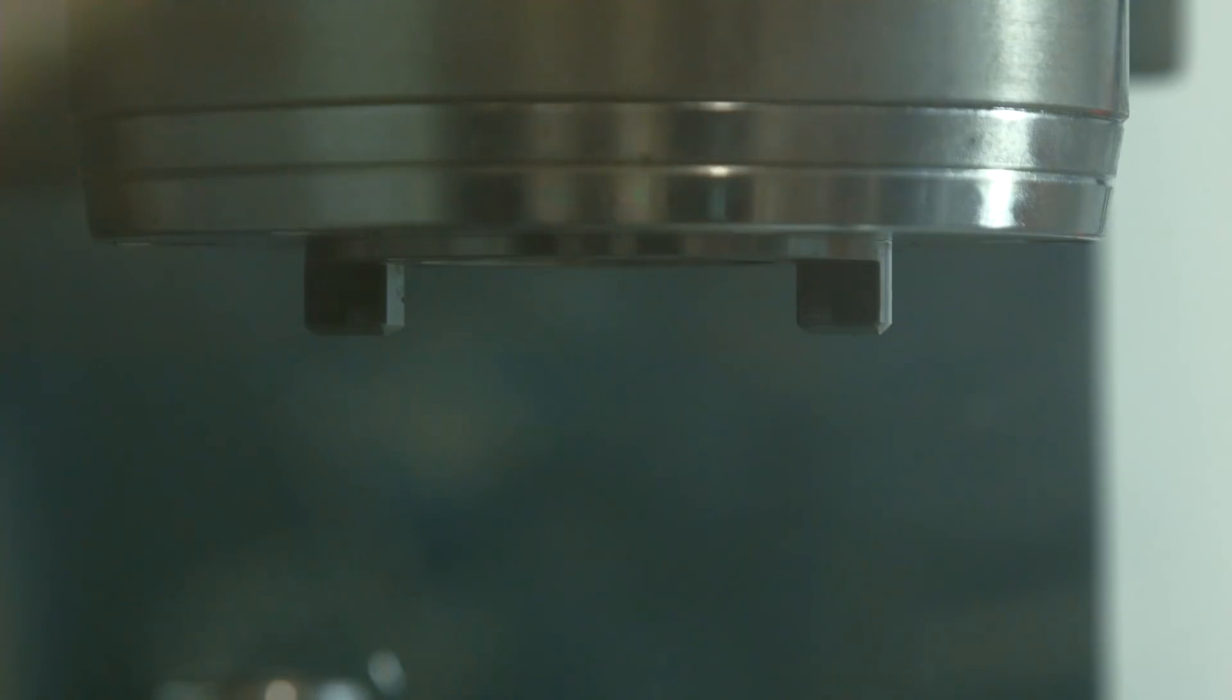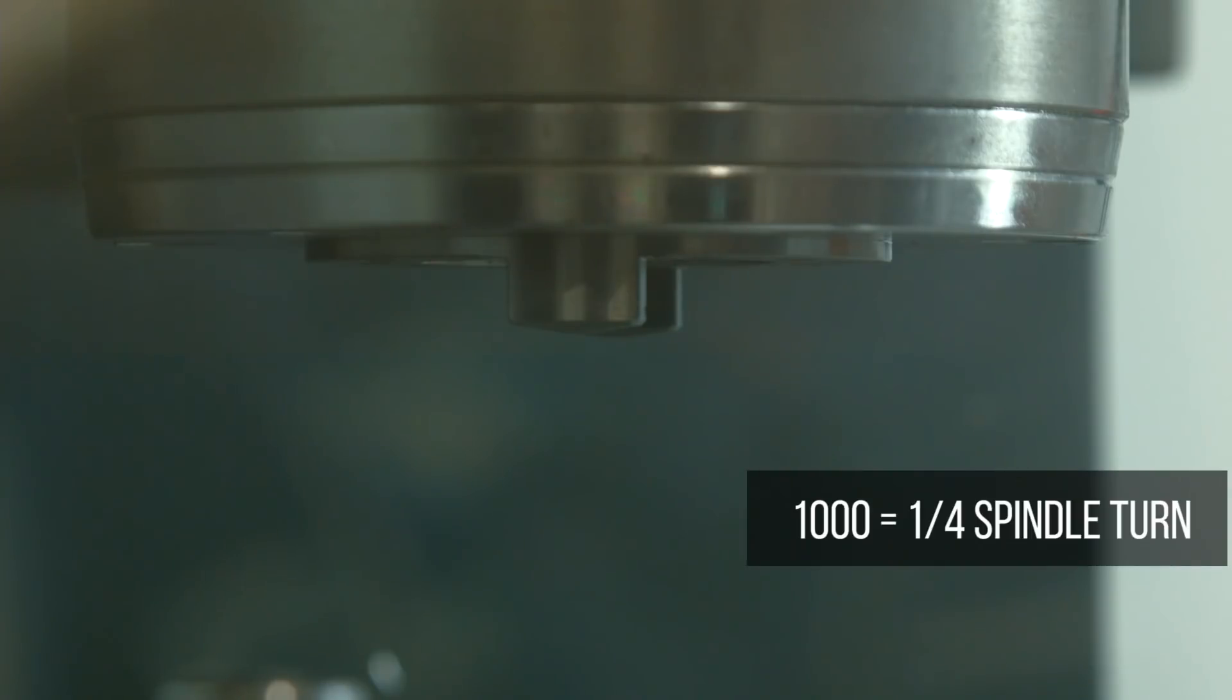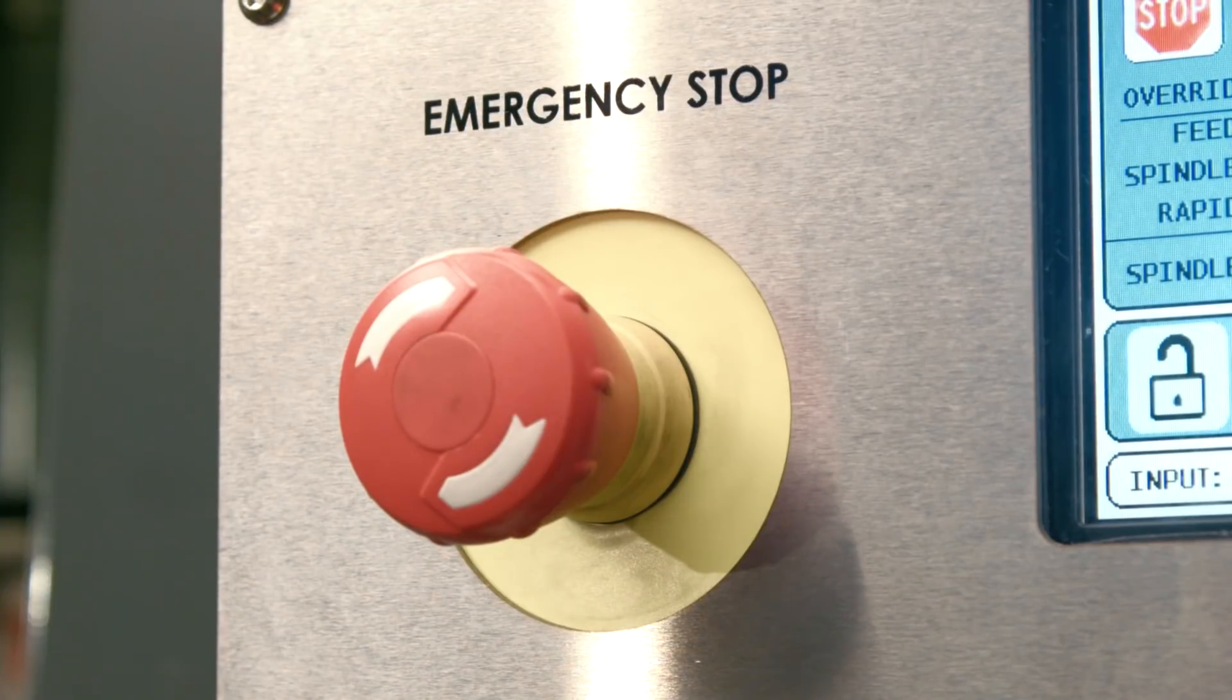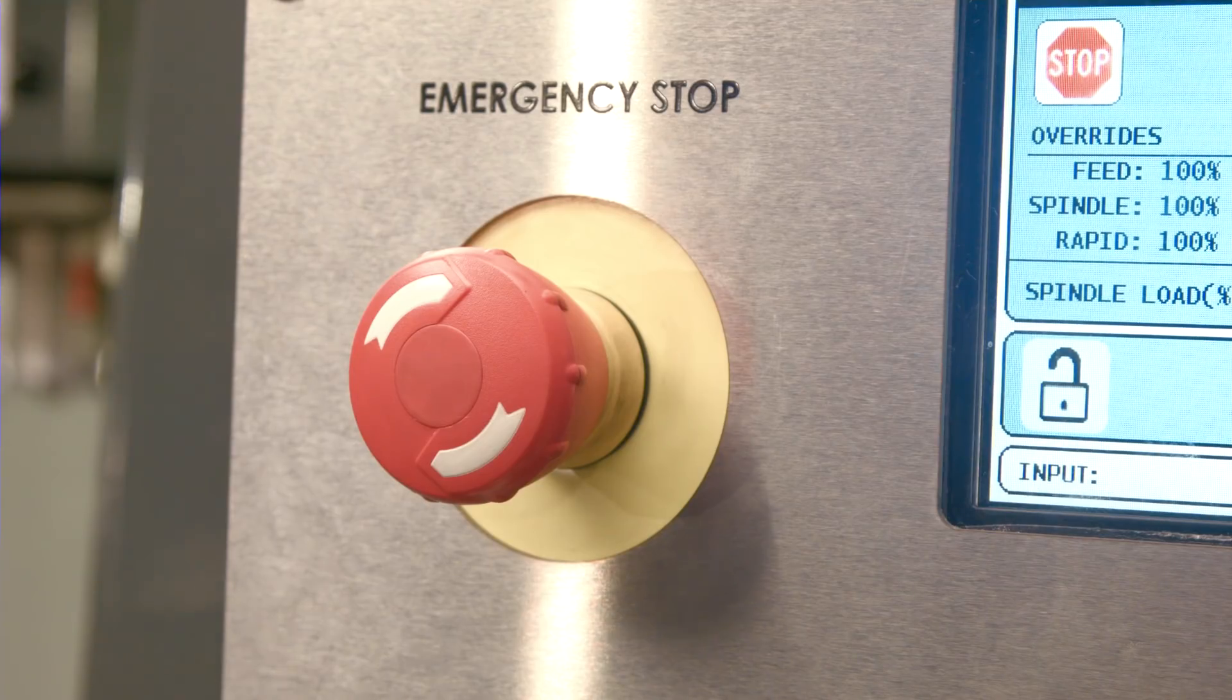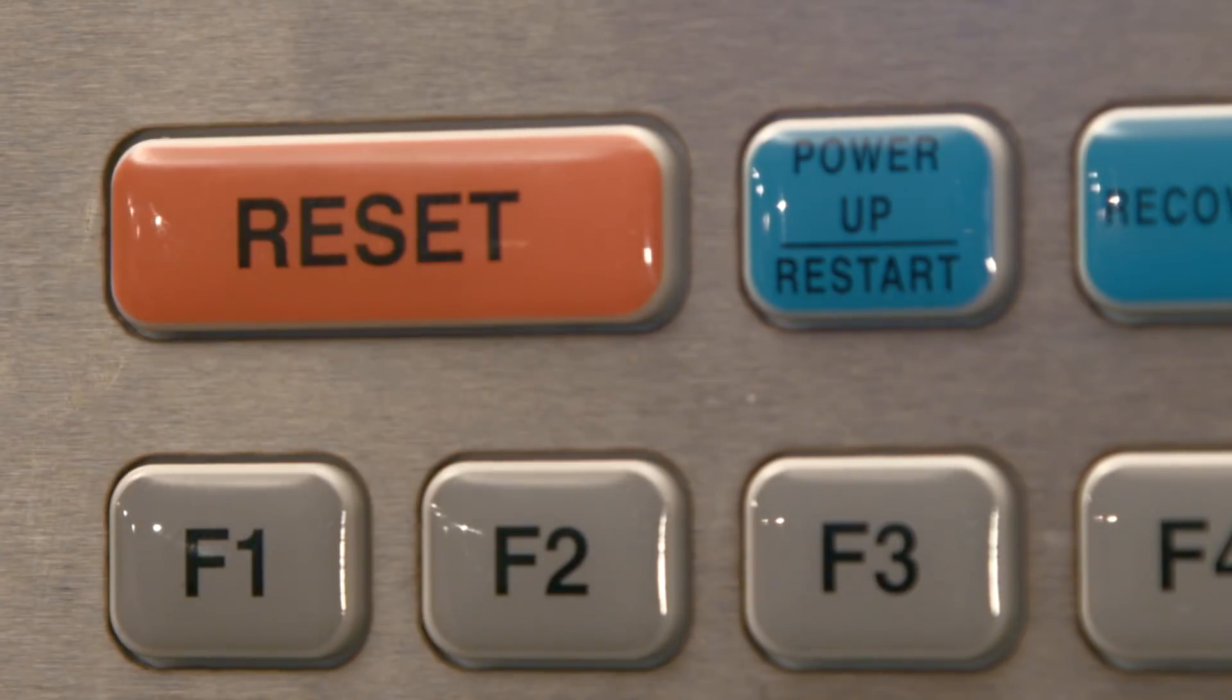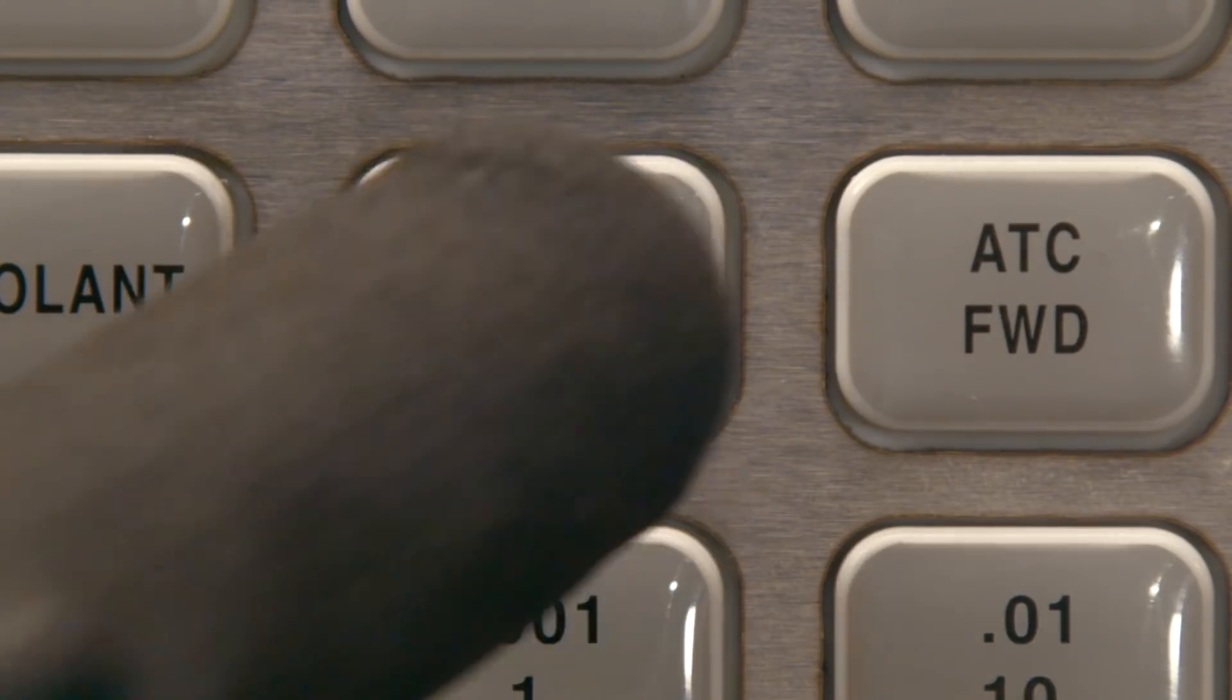For reference a value of a thousand is equal to a quarter turn of the spindle so I'll use that as my baseline. Press e-stop, type 1000 and press enter. Release the e-stop and press reset a couple times to clear the alarm. Press orient spindle.